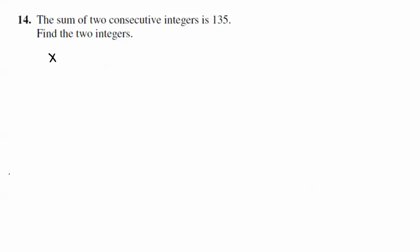And then we're looking for the sum, so we want to add to that number the next number. Well, how do we get to the next number? It's just one more. How do we get from 4 to the next number? We just go up by 1. So here we're going to go up by 1 also. So x plus x plus 1, and that's the sum of two consecutive integers, has to equal 135.